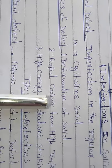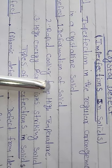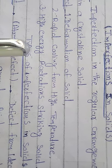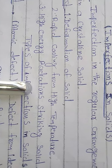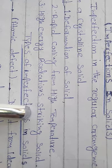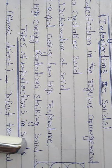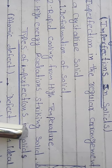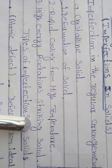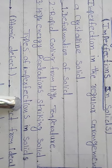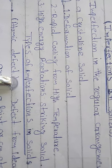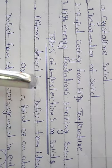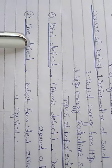The causes of defects include deformation of solids, rapid cooling from high temperature, or high energy radiation like X-rays striking the solid directly. There are two main types of imperfection in solids: point defect and line defect.